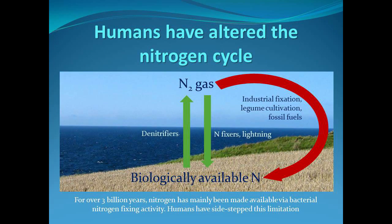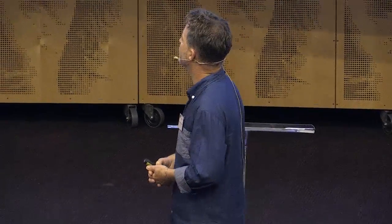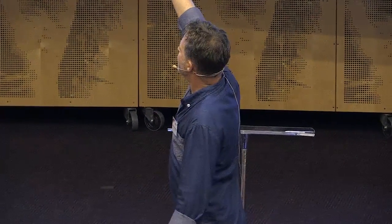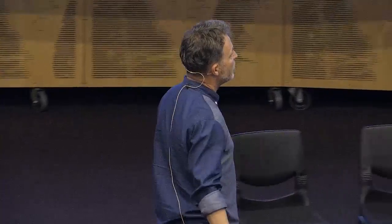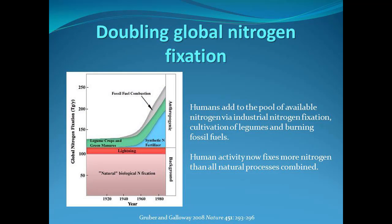Microorganisms from about 2.7 to 2.8 billion years ago have fixed most of the nitrogen on the planet available for plant and animal consumption, and this is balanced by organisms that denitrify and convert it back to nitrogen gas. We have completely sidestepped this process through a combination of industrial fixation via the Haber-Bosch process, legume cultivation, and burning of fossil fuels - we are now responsible for doubling this nitrogen-fixing flow.